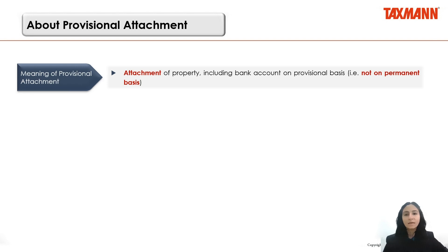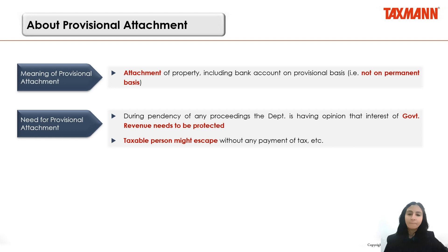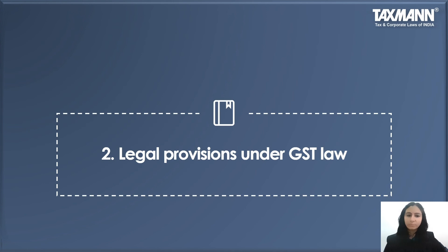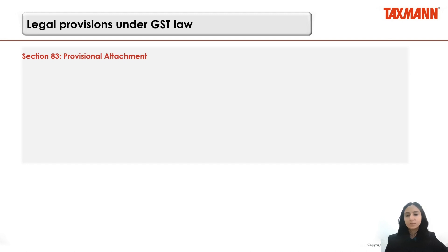Provisional attachment, as the name suggests, is the attachment of a property on a provisional — meaning temporary, not permanent — basis. The need for provisional attachment arises where the department is of the opinion that the revenue interest needs to be protected. It is interesting to note that recently the department has been increasingly issuing orders attaching bank accounts and various properties in numerous cases. In fact, the Gujarat High Court has said that around 10 such matters are listed in court every day.